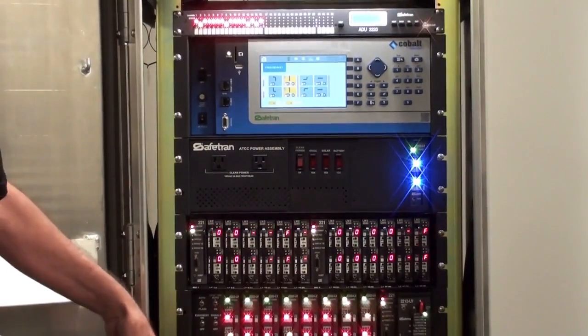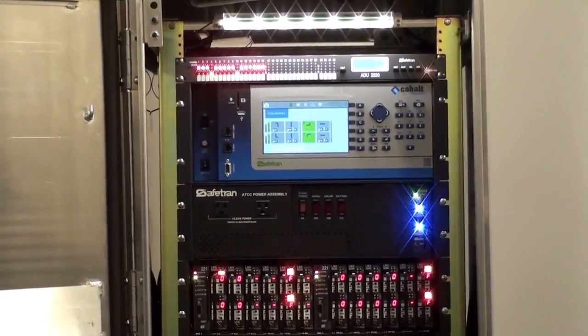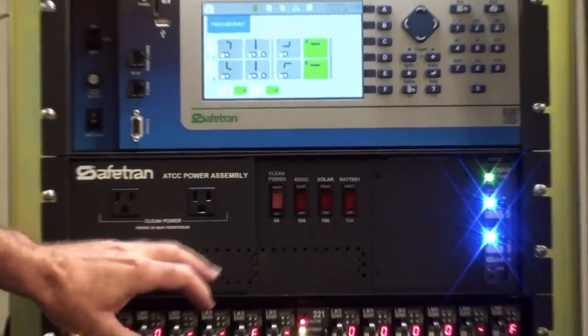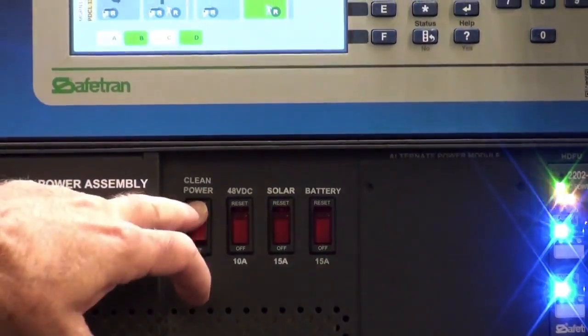For example, you can remove the input assembly, output assembly, controller, and auxiliary display unit, or ADU, from the cabinet, and it will stay in flash. This keeps the intersection in a safe state during maintenance or equipment replacement.